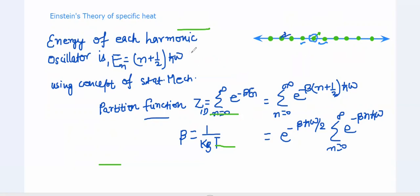The energy of a harmonic oscillator is given as E_n = (N + 1/2) ℏω. Using the simple concepts of statistical mechanics we can derive a result for heat capacity. We use the concept of the partition function. The partition function in one dimension is equal to the summation from n=0 to infinity of e to the power minus β·E_n, where β = 1/(k_B T).